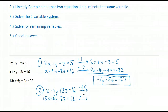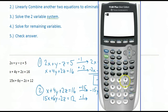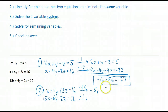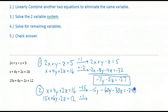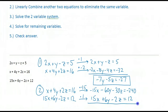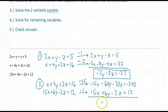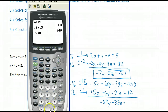I'm going to multiply the second equation by negative 15 and the third equation by 1 so that my x coefficients are opposites. When I add, my x's will be eliminated, and I'm left with negative 54y minus 32z equals negative 228.